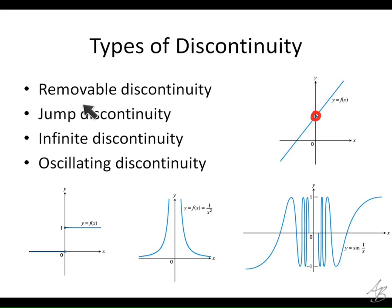So a removable discontinuity would be a graph like this, where we have more or less a continuous function with this hole here. So if I were drawing it, I could draw up to this point right here with my pencil, and then I would have to stop and pick it up, and then continue on the other side of that hole. So that would be what's called a removable discontinuity. Why is it called removable?